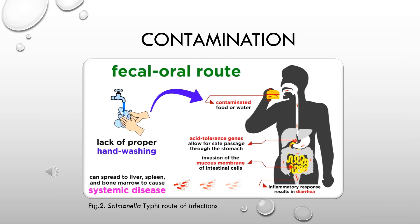How can one be infected with Salmonella typhi? We have mainly the fecal-to-oral route, where you actually consume contaminated food or contaminated water, and that's how Salmonella typhi gets into the system. Because of its acid tolerance gene, it can go through the stomach and invade the mucous membranes of the intestinal cells.